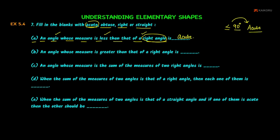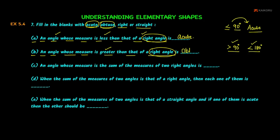Part (b): an angle whose measure is greater than that of a right angle. A right angle is 90 degrees, so here we need greater than 90 degrees but less than 180 degrees. This angle is what we call an obtuse angle. The answer is obtuse.